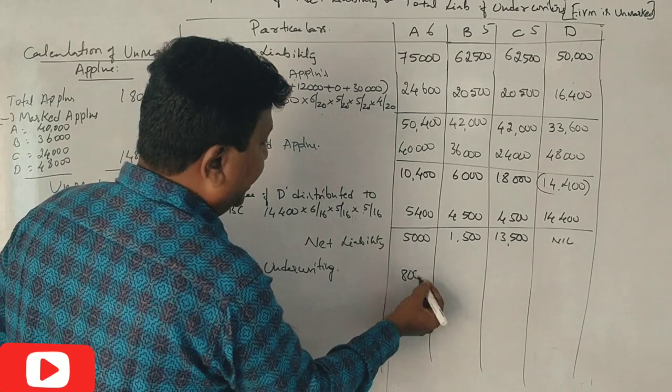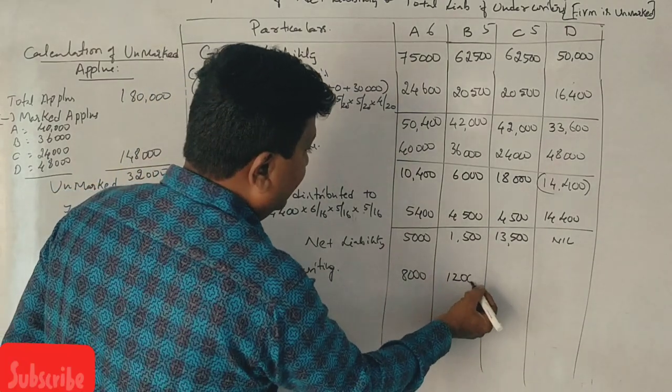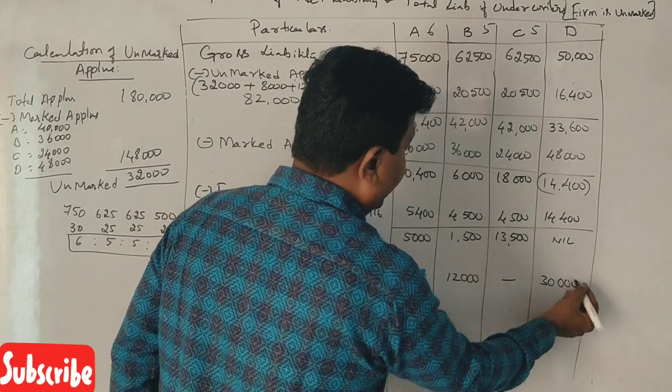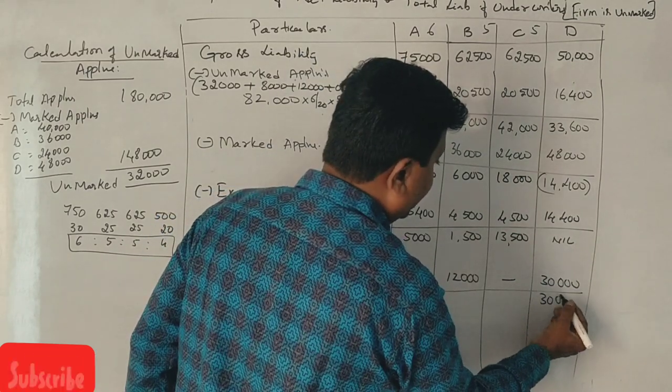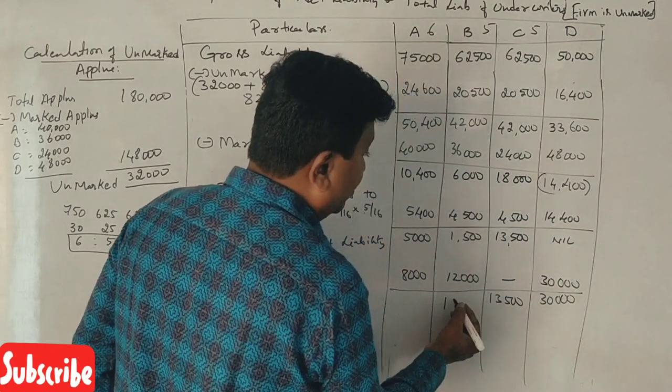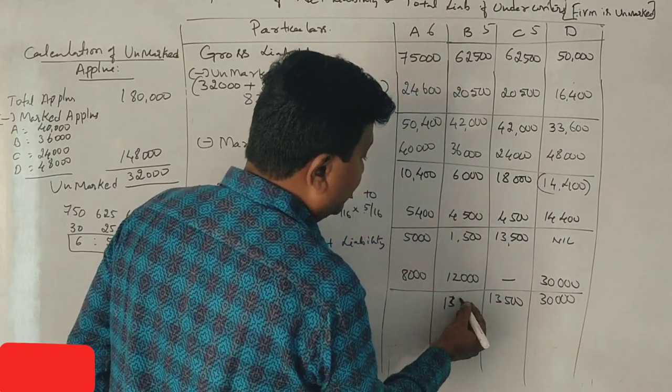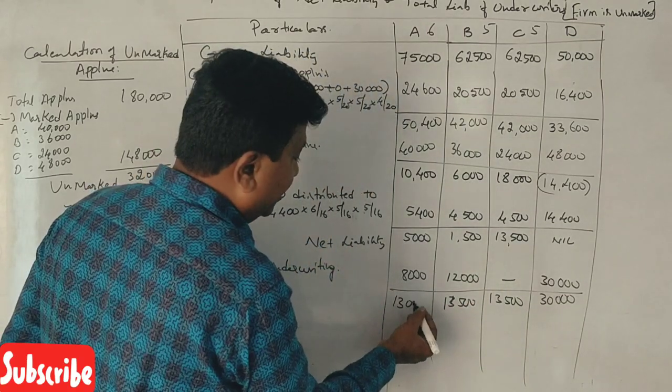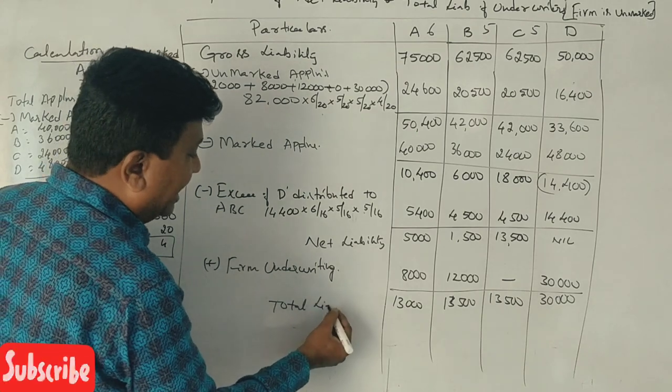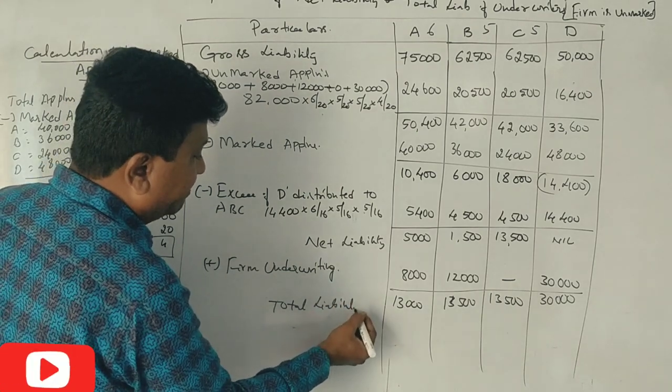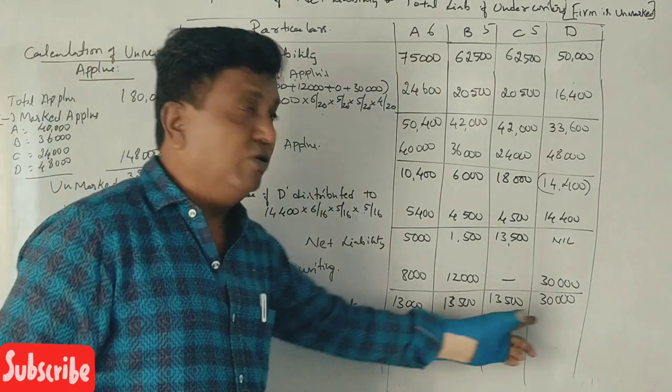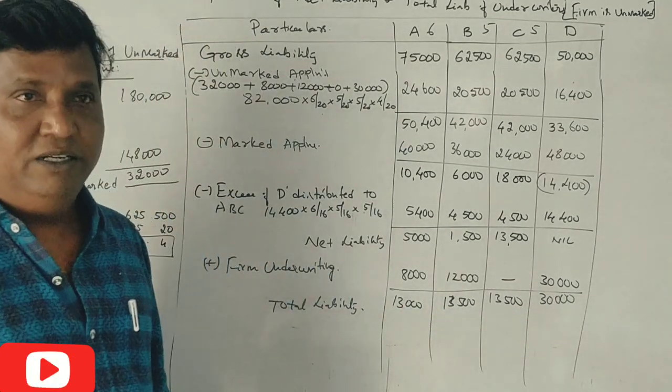A rest is there 8,000, B rest is there 12,000, C is there a lot, D is 30,000. I'll get total model right, you look 13, 13,500, 13,500. That means total liability. Okay, now you hear it. You say total model has done correctly. Yes sir, it is correct.